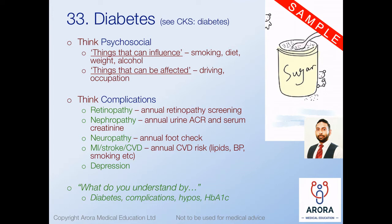Think about complications: retinopathy - offer annual retinopathy screening; nephropathy - annual urine ACR and serum creatinine; neuropathy - annual foot check covering both neurological and vascular components; increased cardiovascular disease risk - annual CVD risk assessment including lipids, blood pressure, and smoking; and diabetes can increase the risk of depression, so screening is important. It's also important to understand what the patient knows - what do they understand by diabetes, complications, hypoglycaemia, or HbA1c? Understanding the patient's viewpoint is really important.